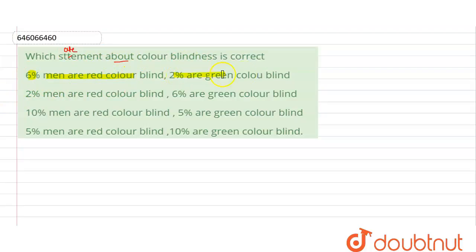Okay, two percent men are red color blind, six percent are green color blind. So in this question, I'm going to tell you the direct answer: two percent men are red color blind and six percent men are green color blind.